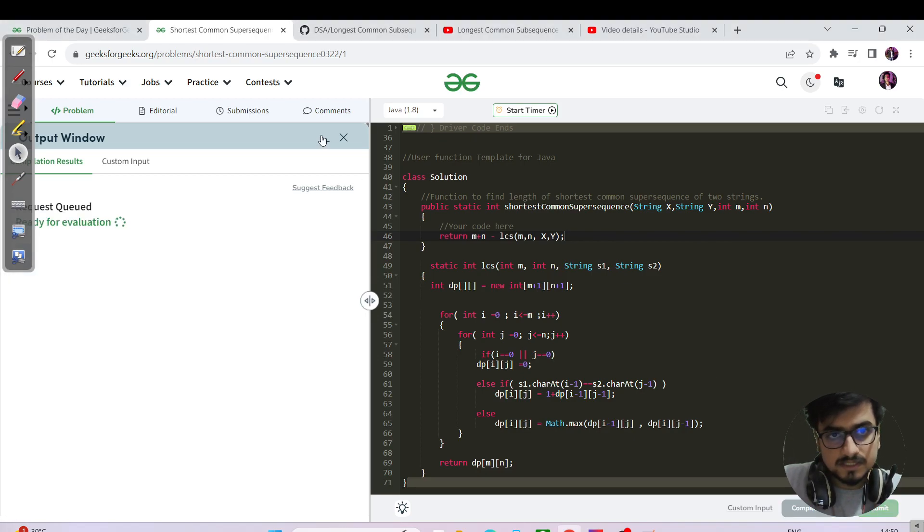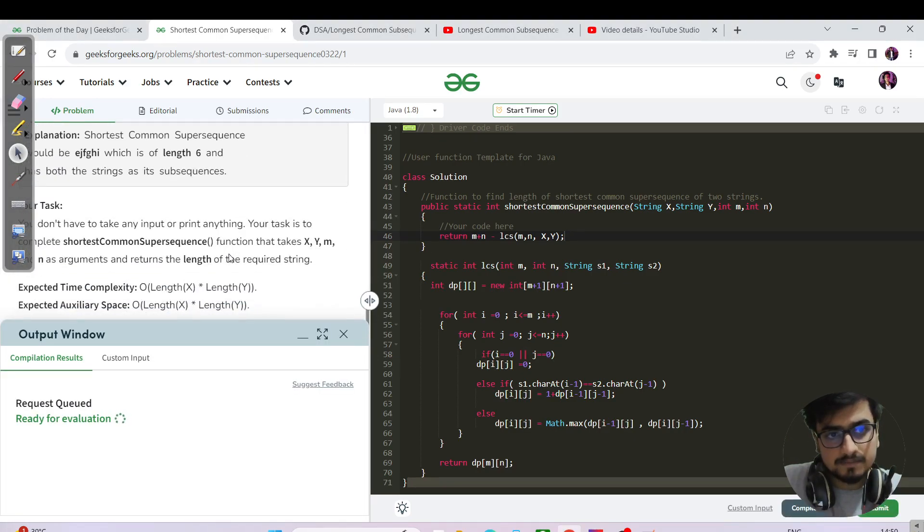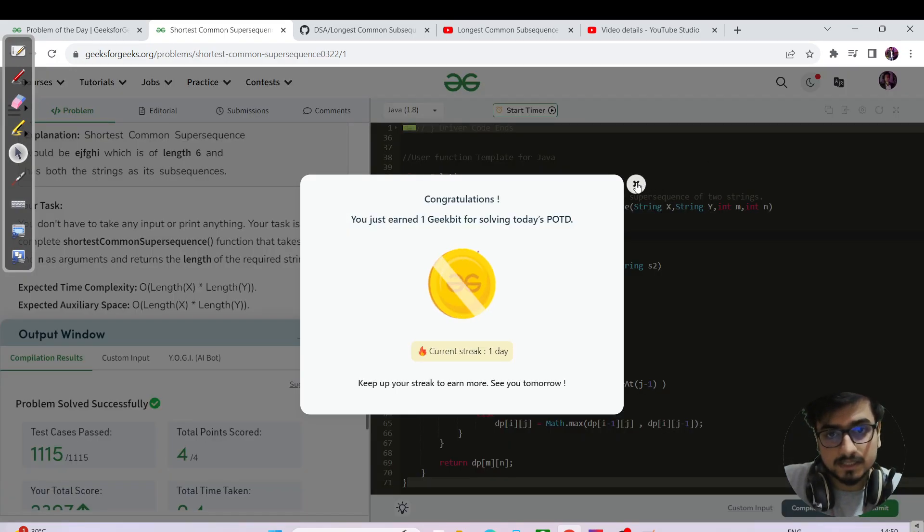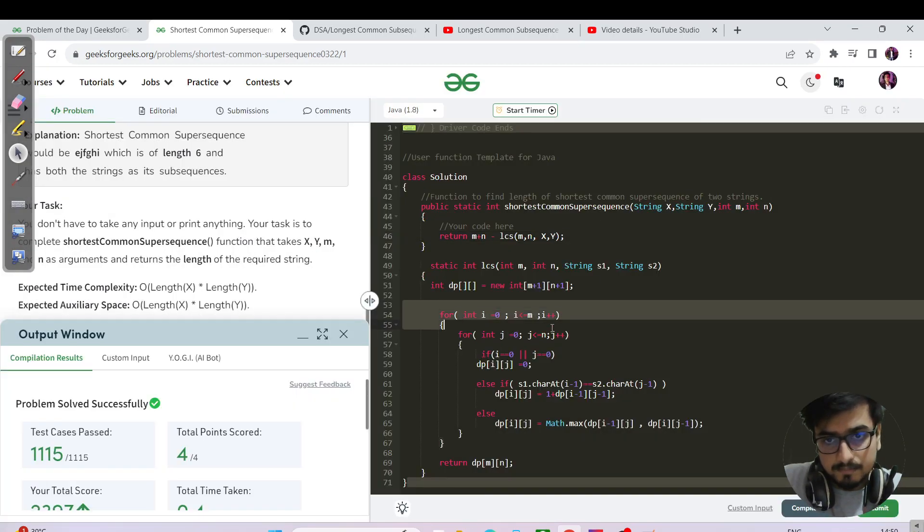Let's just hit the submit button. What is the time and space complexity? The same that we were using for LCS. You can clearly see that it is M cross N as time, and since we are using M cross N for the DP array, it is the space complexity given here as well.